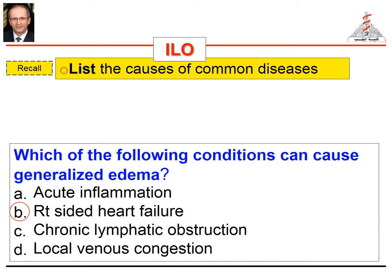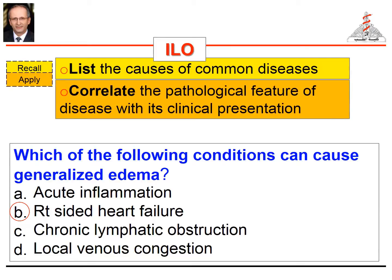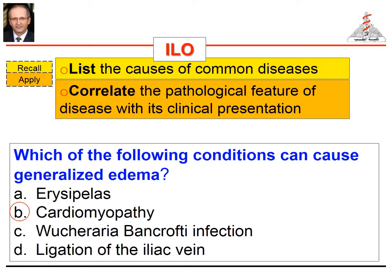But if you would like to target knowledge application, you can substitute pathological conditions with the disease causing that condition. So instead of right-sided heart failure, use cardiomyopathy and so on. Can you appreciate the difference? Now it can target a higher learning outcome: correlate the pathological feature of a disease with its clinical presentation. It's the same question but written in a more refined form.